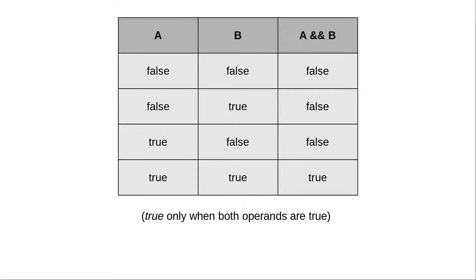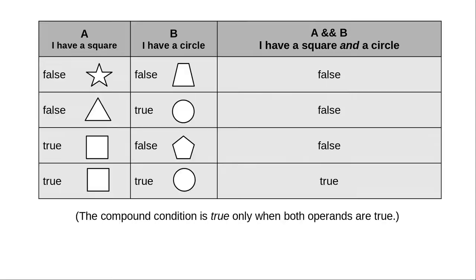Here's the truth table that shows how AND works. That's a bit abstract, so here's a more concrete example. When condition A is I have a square, and condition B is I have a circle, the compound condition A and B, I have a square and a circle, is true only when A is true and B is true, when both operands are true.